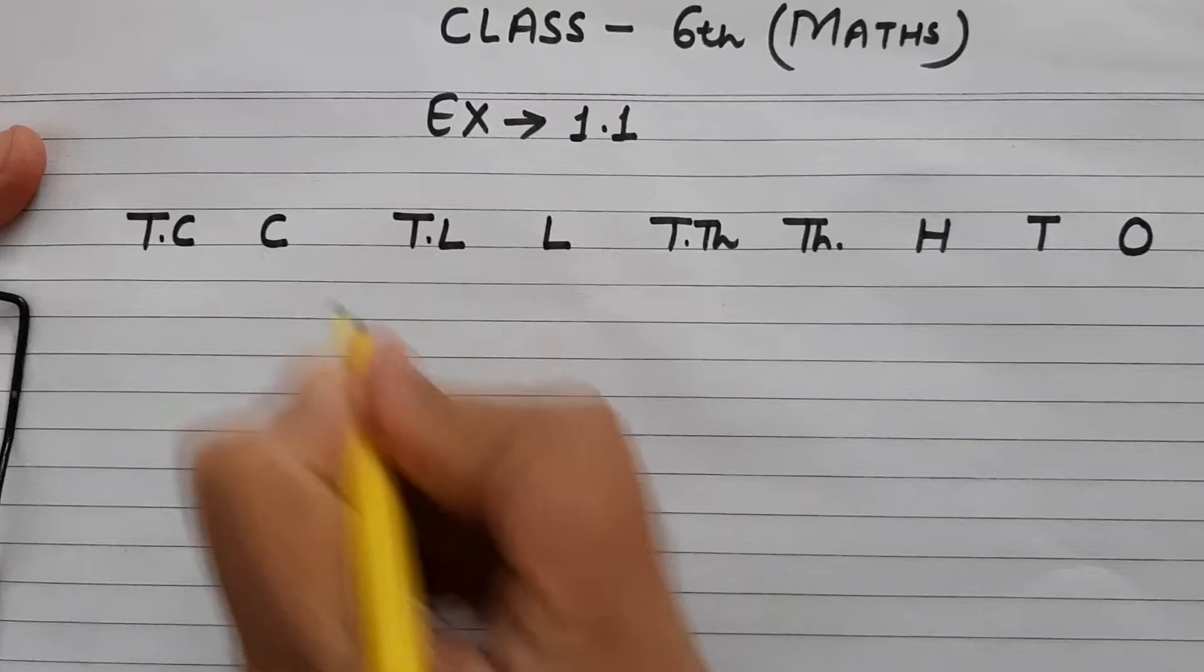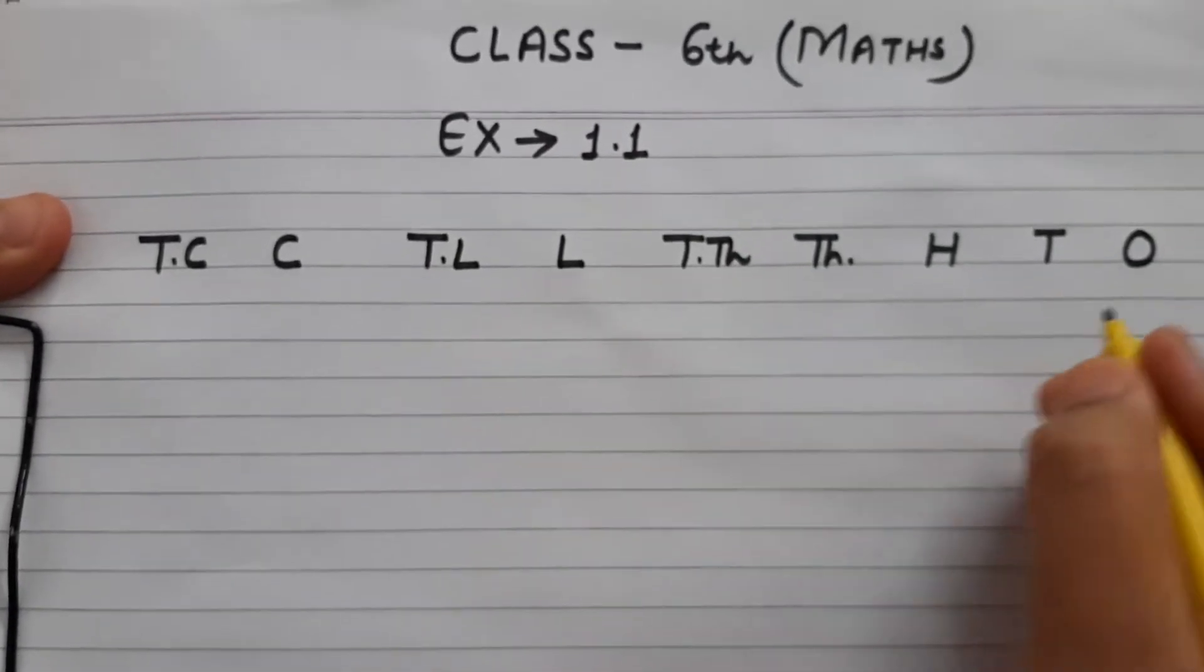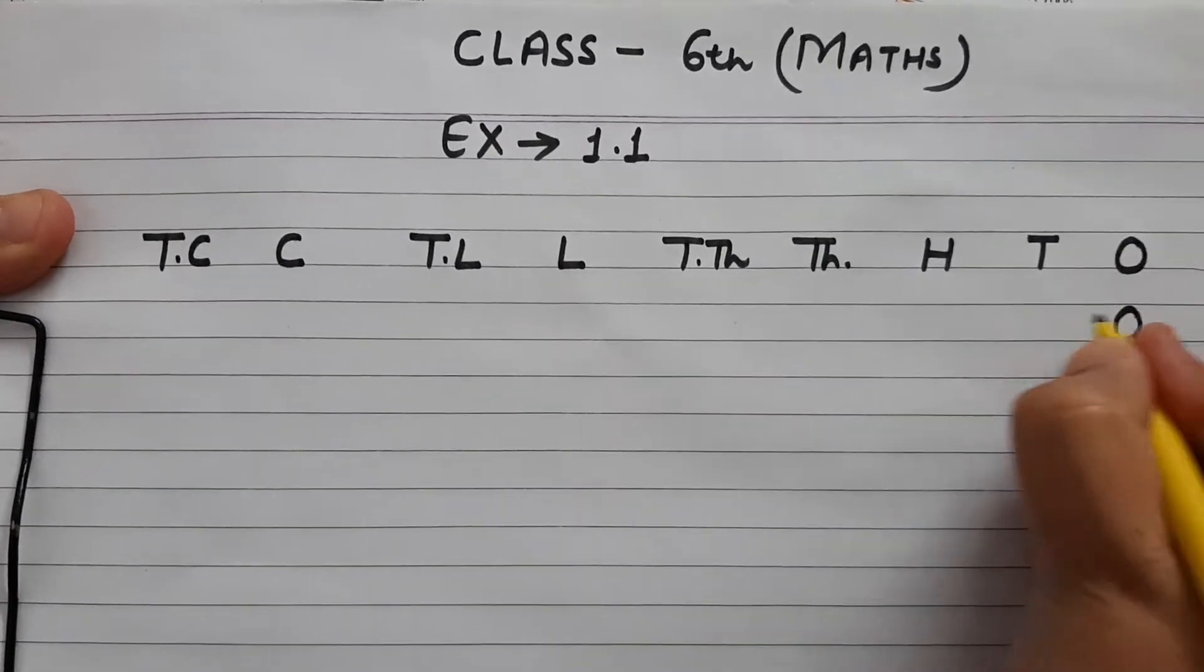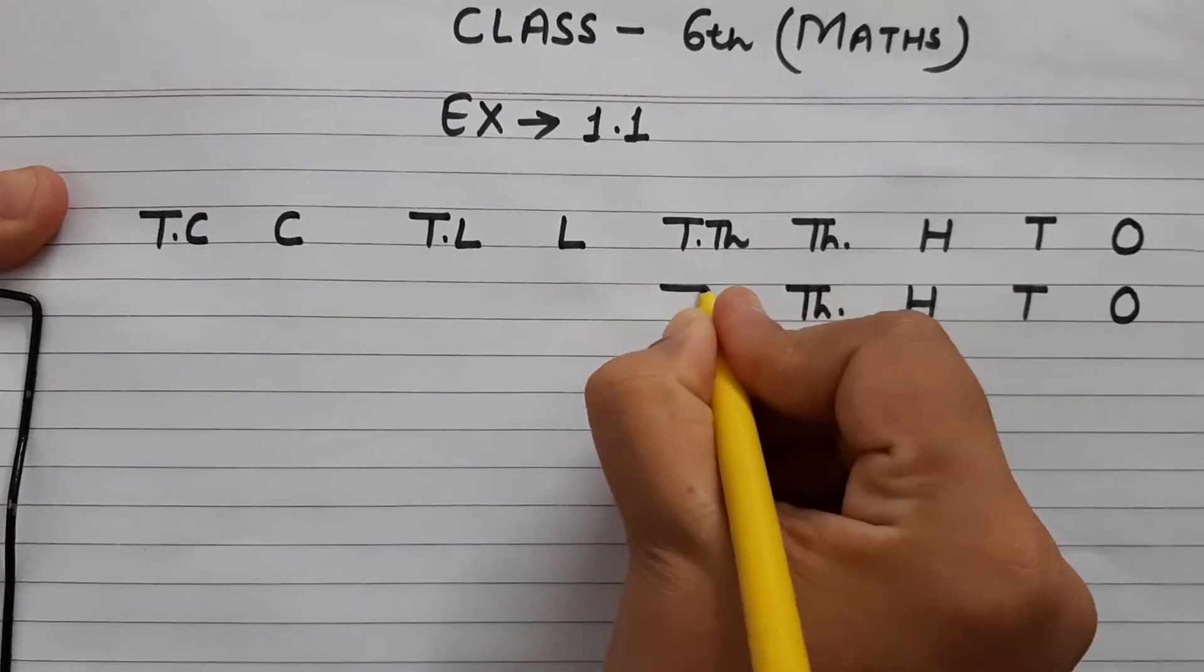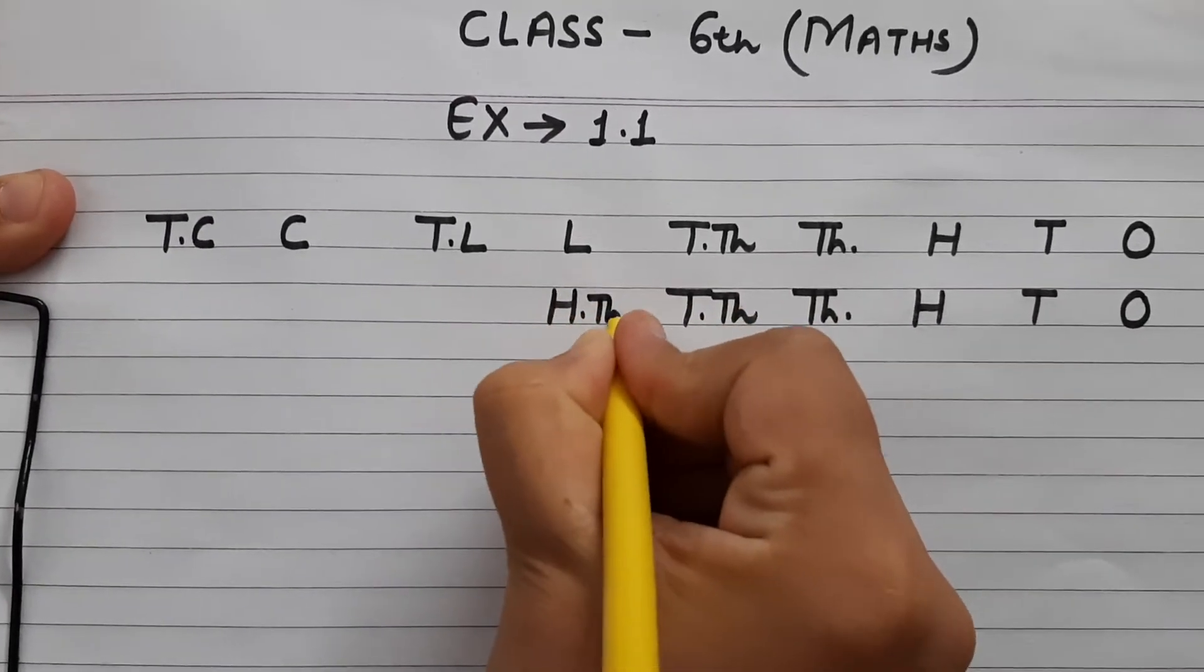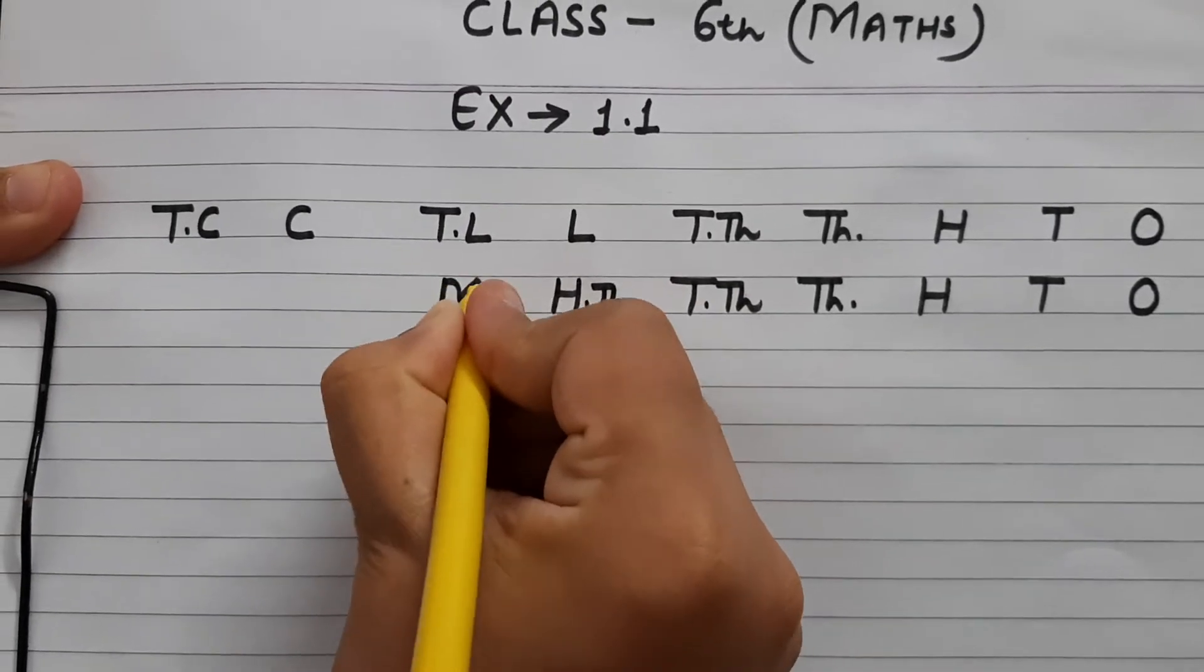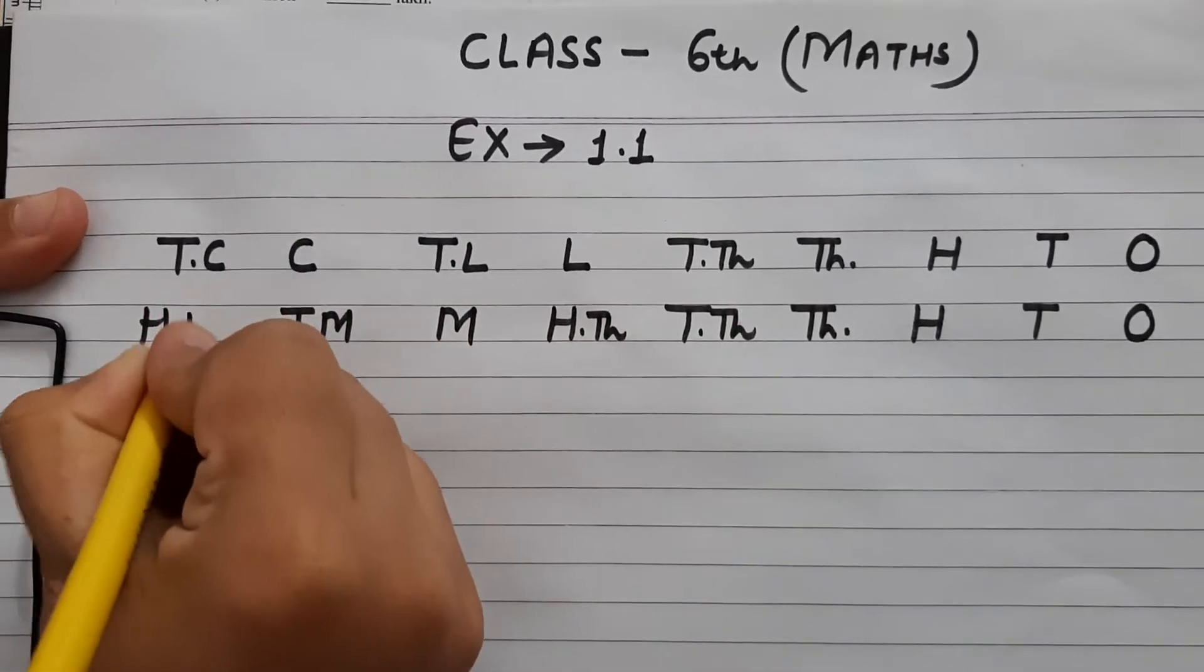इसी के नीचे मैं international place value system लिखोंगी, once, tens, hundred, thousand, ten thousand, hundred thousand, million, ten million, and hundred million.